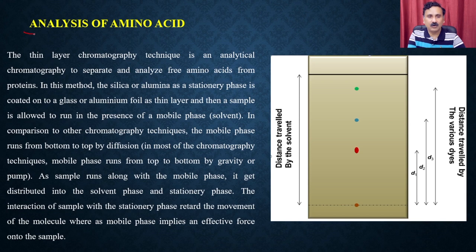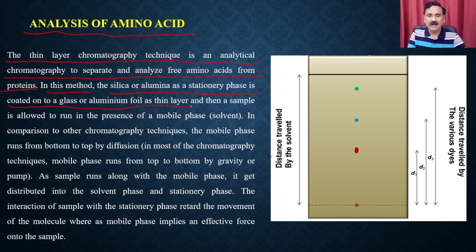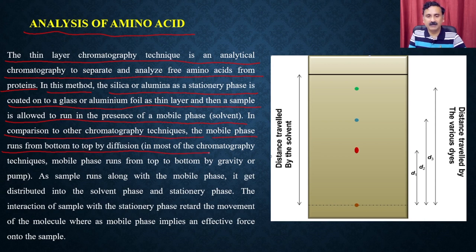Thin layer chromatography is an analytical technique to separate and analyze amino acids from protein. In this method, silica or alumina as a stationary phase is coated onto glass or aluminum foil as a thin layer, and the sample is allowed to run in the presence of the mobile phase. Unlike most chromatography techniques where the mobile phase runs from top to bottom by gravity, in TLC the mobile phase runs from bottom to top by diffusion.